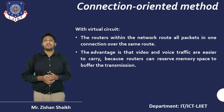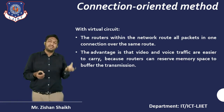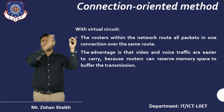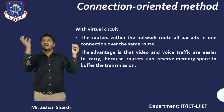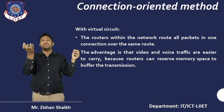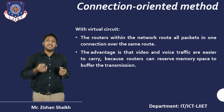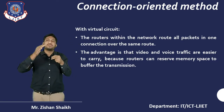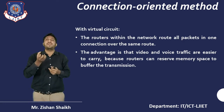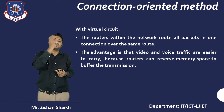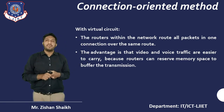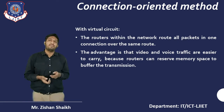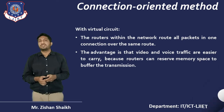With virtual circuit: the router within the network routes all packets from source to destination. When the source wants to send data, it tells the intermediate router the destination, and the router manages all routes. The biggest advantage is that the router itself knows which route is best and optimal, so it decides the next route. With virtual circuit, video and voice traffic is easier to carry because the route reserves memory space in the buffer for transmission.